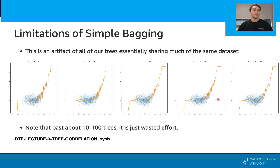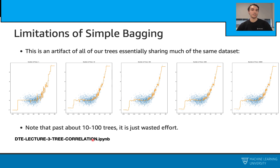Let's talk about one more example with simple bagging. This time, we will use a notebook. In this example, we will try to see the effect of adding more and more trees to our bagging method, and see whether it improves the model or it just doesn't change anything. We fit multiple bagging methods with an increasing number of decision trees and plot them. As you see, it goes from 1 all the way to 10,000. What we realize is that after about 10 to 100 trees, adding more trees does not change things too much — we get a very similar response.